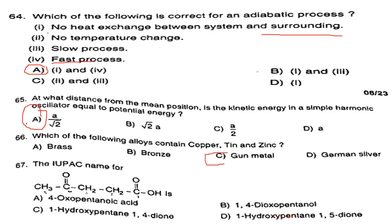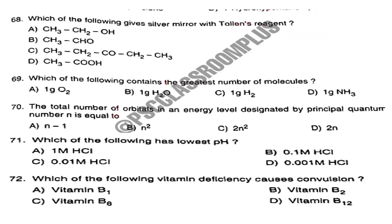Question number 67. The IUPAC name for the structure. The answer is Option A: 4-oxopentanoic acid. Question number 68. Which of the following gives a silver mirror with Tollens' reagent? Answer is Option B: CH₃CHO.